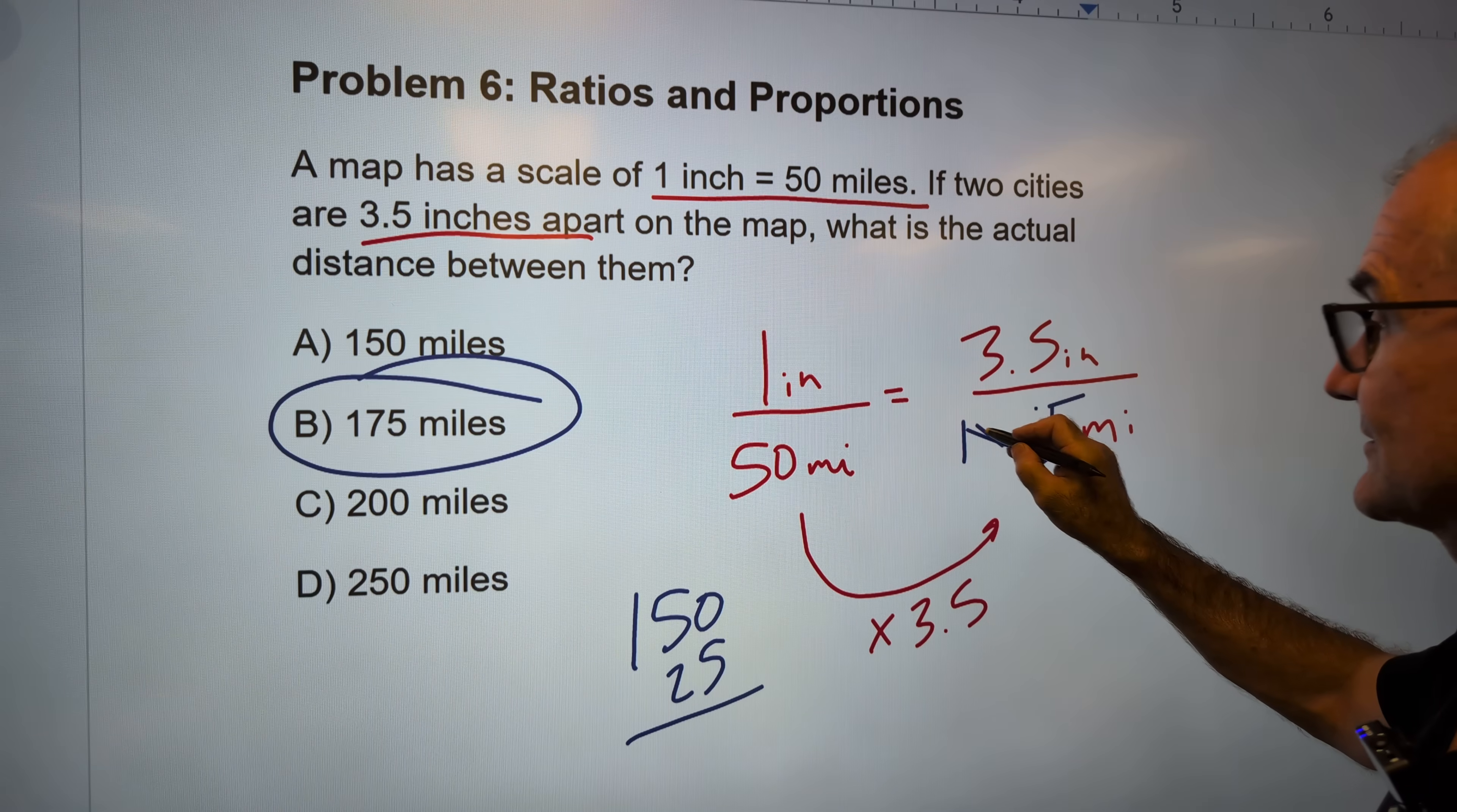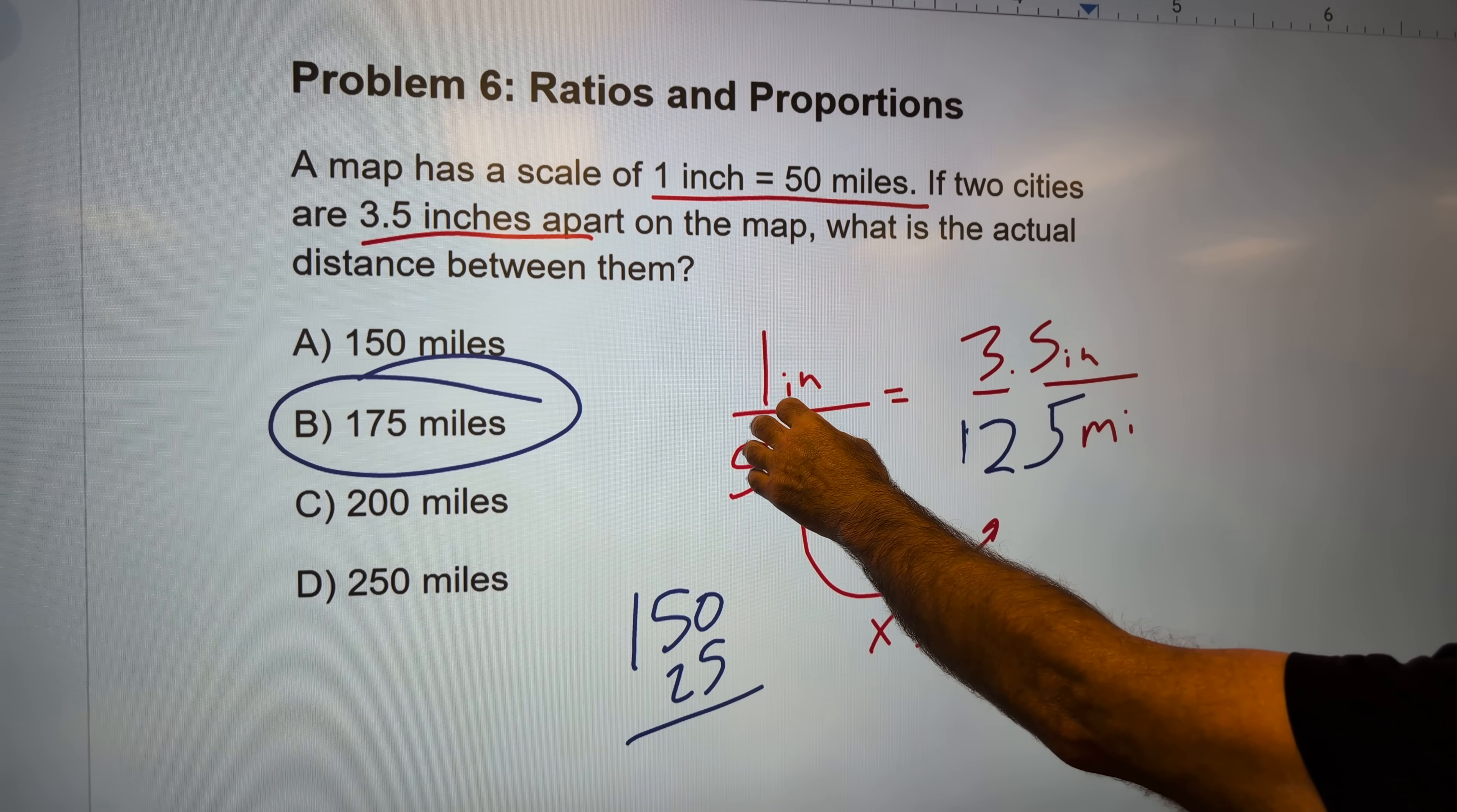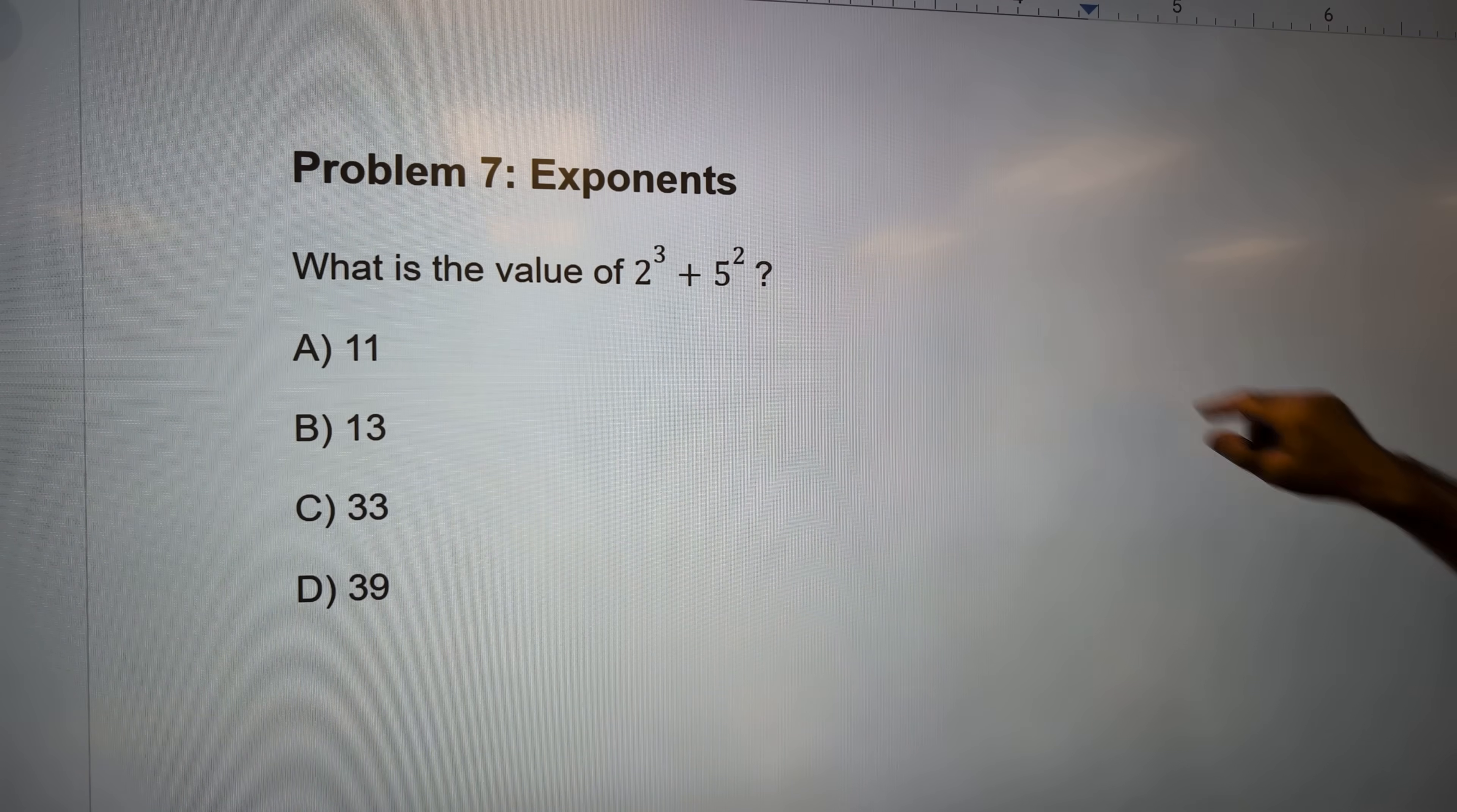If you have a little extra time on this. Good Lord, pen's not working very well. You could always double check that work. Let me just clean this up a little bit. 125, does that make sense? 1 is 50 miles, 3.5 is 125. Yeah, that makes sense. It looks like a reasonable answer. All right, let's move on to problem number 7, exponents.